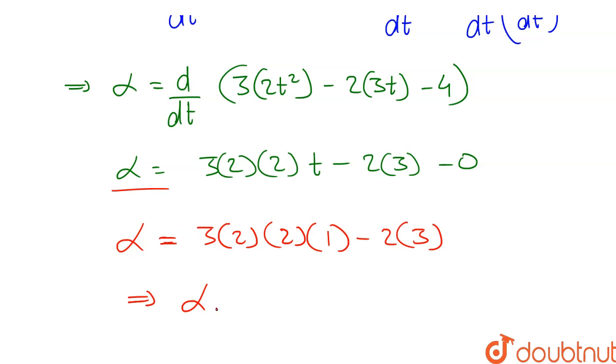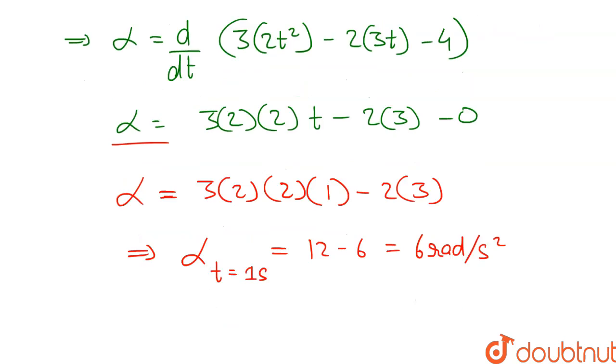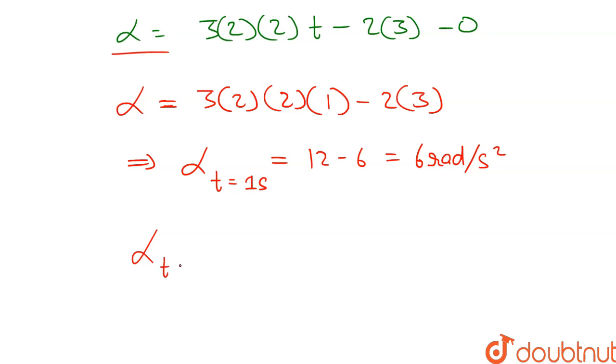Therefore alpha at t equals 1 second is equal to 6 radians per second square.